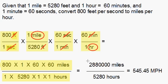We get 2,880,000 miles in the numerator. We get 5,280 hours in the denominator. We divide out 2,880,000 by 5,280 and the result is 545.45. The units left are miles per hour and I just abbreviated MPH.